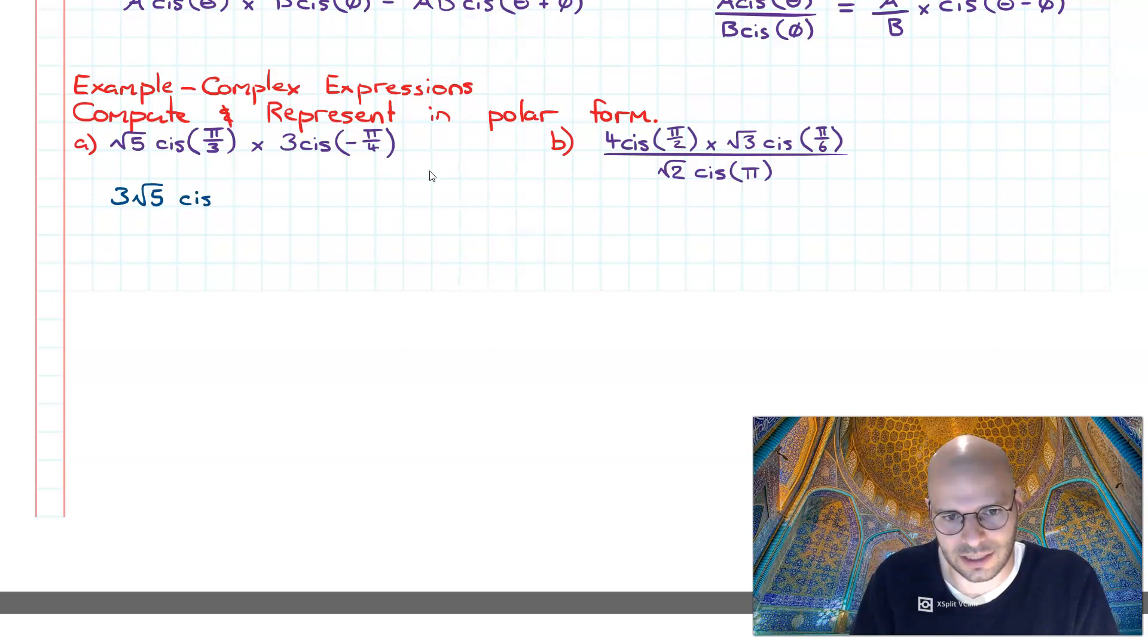Next, I get the theta and the phi, and I go pi over three plus negative pi over four.